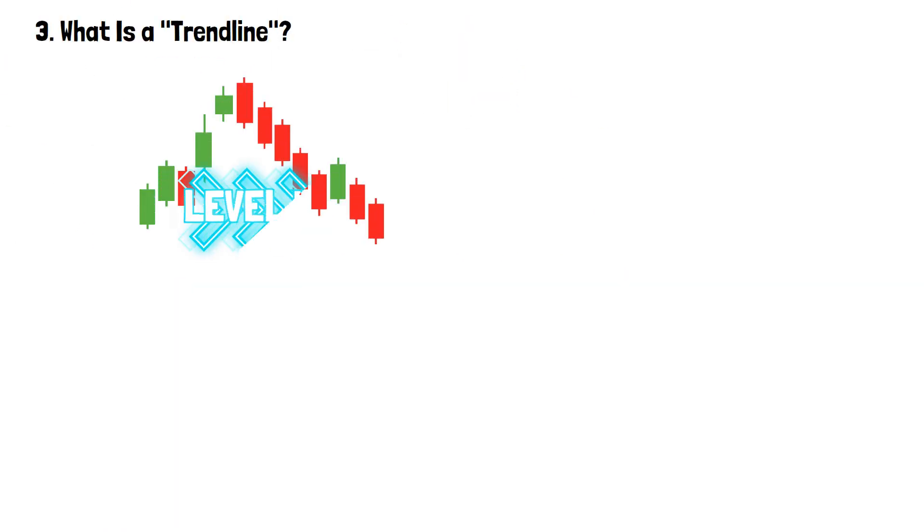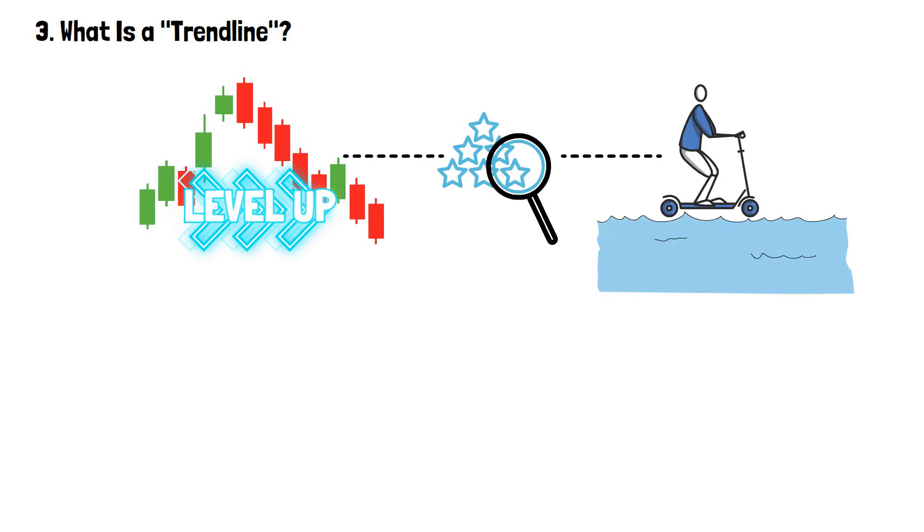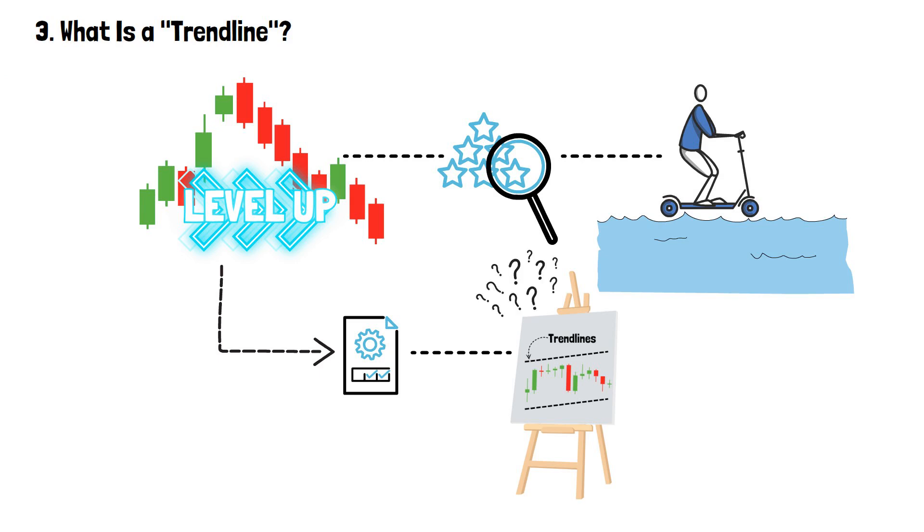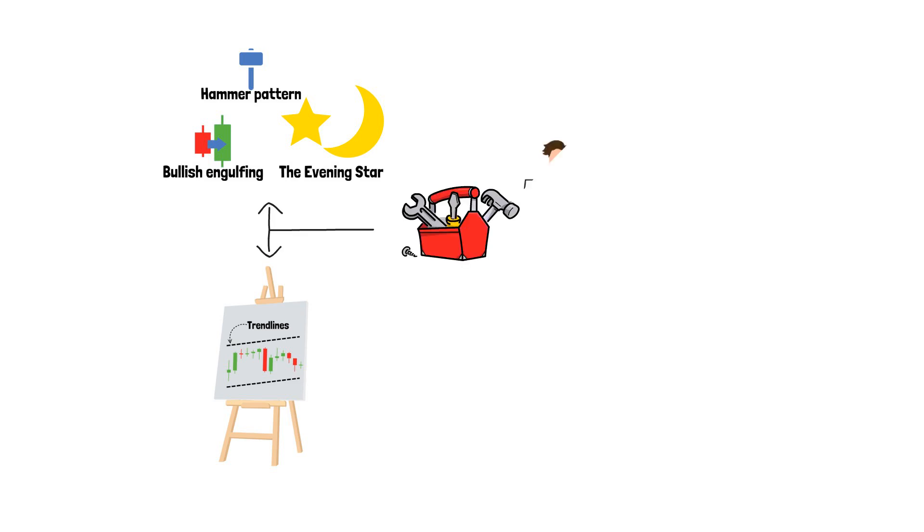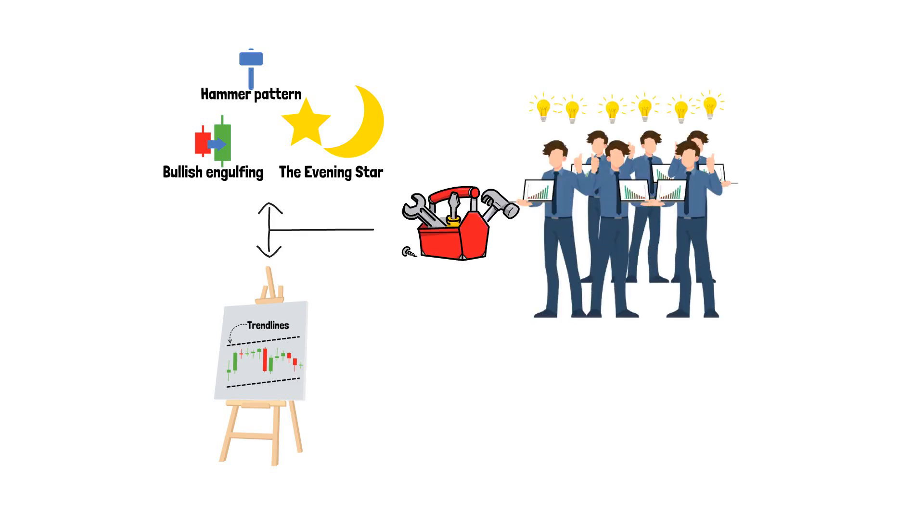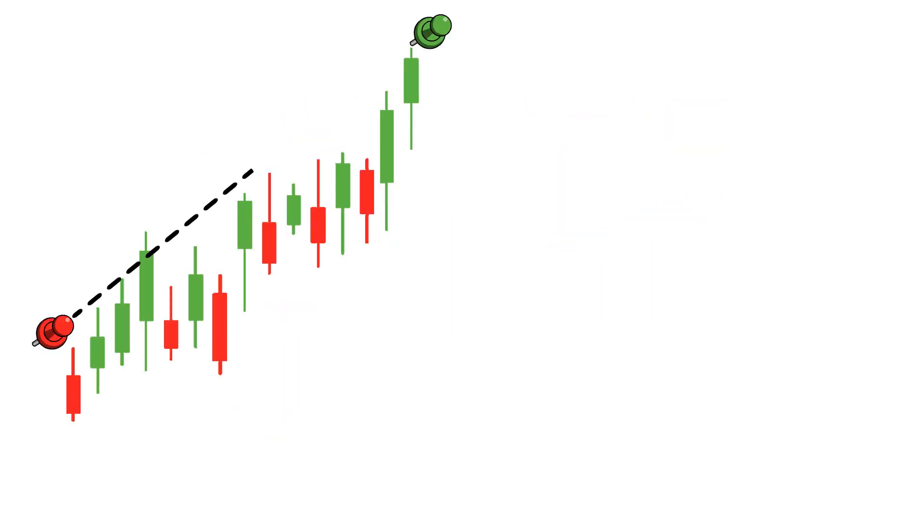Candlestick charts have even more potential. Apart from forming patterns that help traders navigate through the sea of uncertainty, they also provide data so that trend lines could be drawn. But what is a trend line? Just like patterns, trend lines are a useful technical analysis tool that helps traders weigh in various trading decisions. Yet, these two tools serve different purposes. When you connect the high or low points of candlesticks with a straight line, you end up with a trend line.